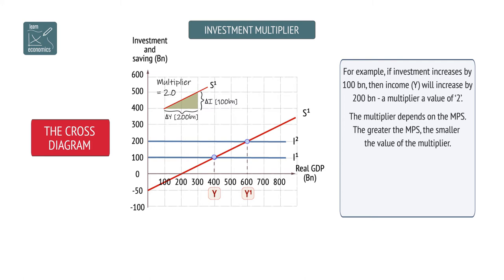The greater the MPS, the smaller the value of the multiplier, as more leaks out of the economy following an injection of investment.